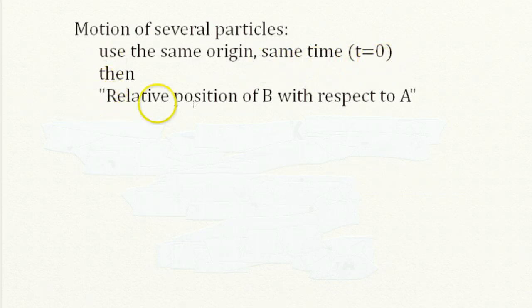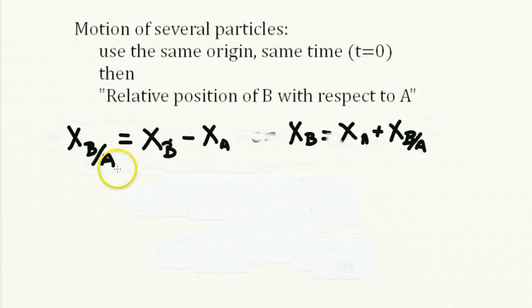And if we do so, then we can talk about the relative position of B, one point, with respect to A, another point. This is how we would write that: the coordinate position of B with respect to A is equal to the coordinate of B, X sub B, minus the coordinate of A, X sub A.